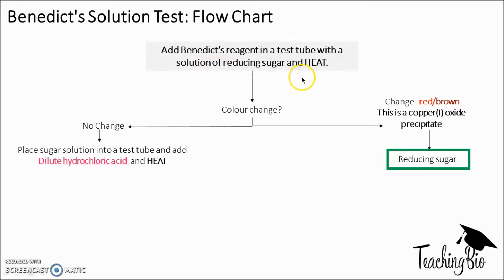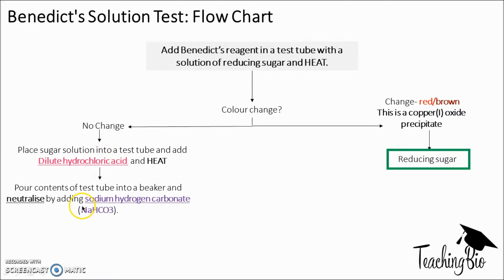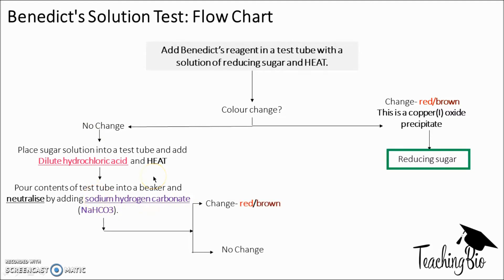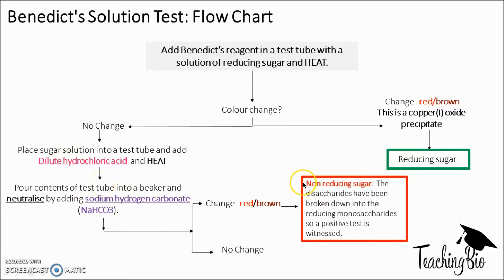After adding dilute hydrochloric acid and heating, we neutralize the hydrochloric acid with sodium hydrogen carbonate (NaHCO₃), which is an alkali. We then observe the colour change again. If it changes to red/brown after this hydrolysis step, then it's a non-reducing sugar - for example, sucrose is a non-reducing sugar. But if there's no change at all then this is definitely not a sugar and it could be anything else.